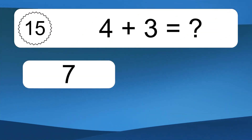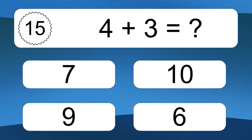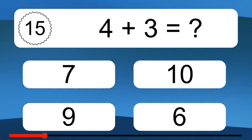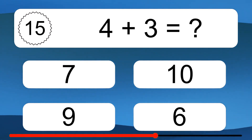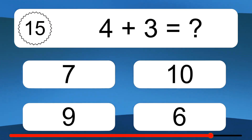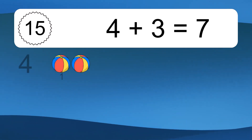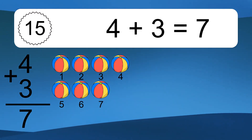4 plus 3 equals what? 4 plus 3 equals 7.